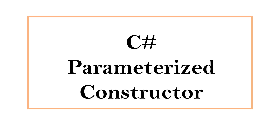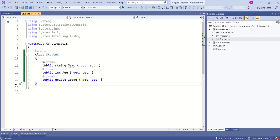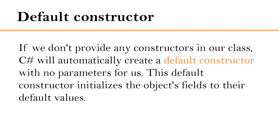Hi, this is Sahana. In this video we are going to learn about parameterized constructors. As discussed in our previous session, a constructor is a special method that gets called when an instance of a class is created. This Student class has three properties but no constructor defined. In such a case, C# automatically creates a default constructor with no parameters, which initializes the object's fields to their default values.